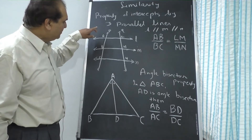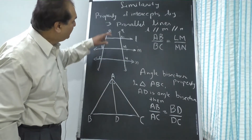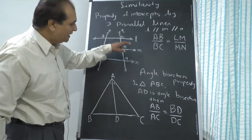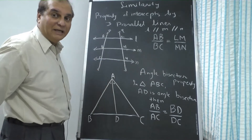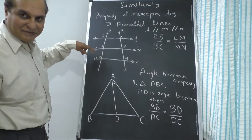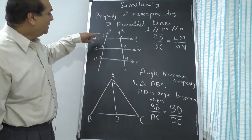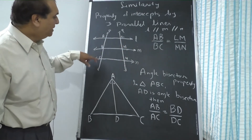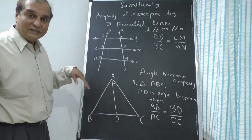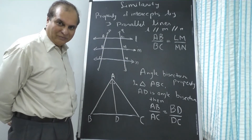Line P is a transversal intersecting the three parallel lines in points A, B, and C. Line Q is another transversal intersecting the same lines in points which we denote by capital letters. Lines are denoted by small letters and points by capital letters. In this case the intercepts are the same: AB is an intercept, BC is an intercept, LM is an intercept, and MN is an intercept. Since the lines are parallel, the ratio of intercepts will be equal: AB upon BC equals LM upon MN. If the ratios are equal, the lines are parallel; if not equal, the lines are not parallel.